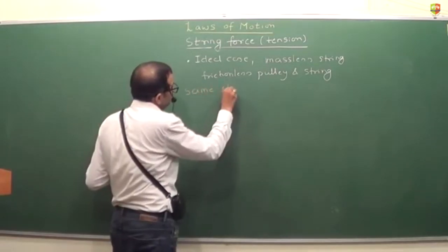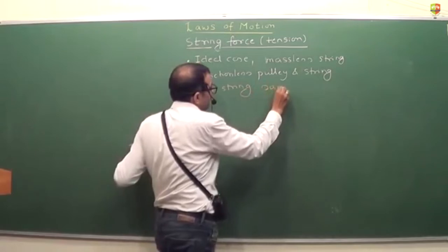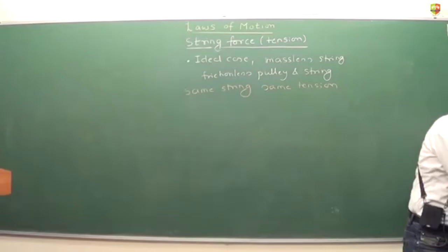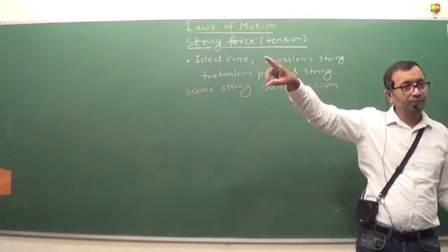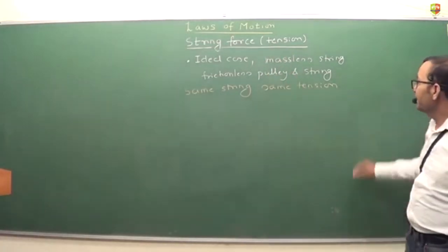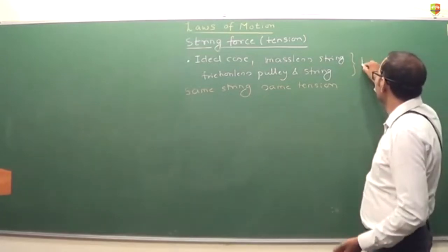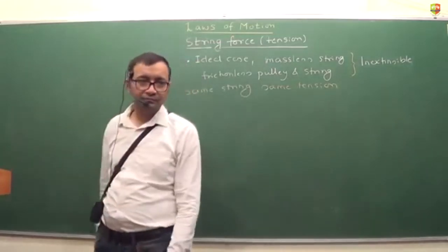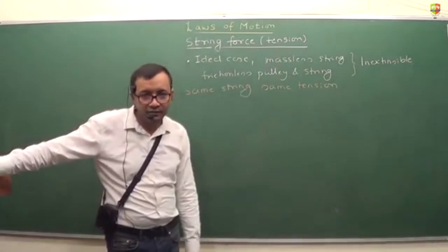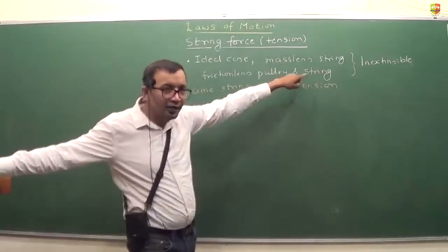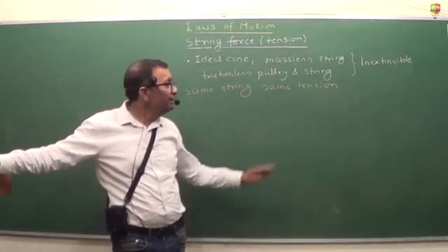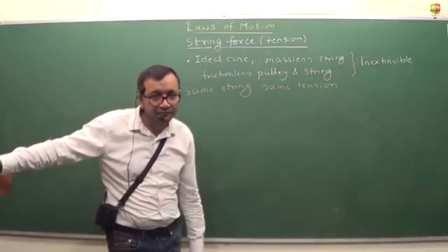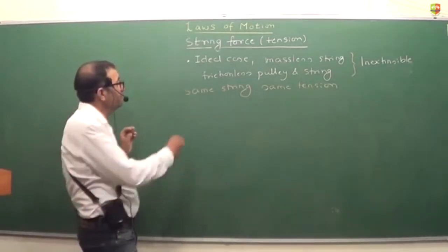If there is a single string — even if it has multiple pulleys and goes around — throughout that string the tension force will be the same. There is one more assumption: the string is inextensible, meaning the length of the string is fixed. Usually this is assumed unless otherwise stated. If there is friction or the string can stretch, it will be specified. Otherwise, assume the string is massless and inextensible — same string has the same tension.